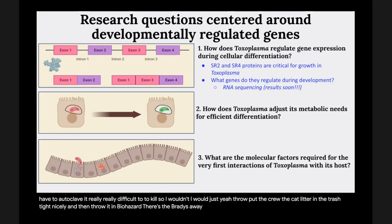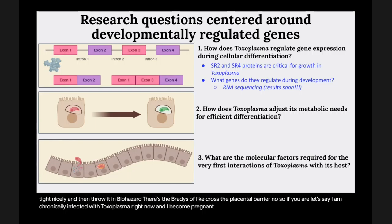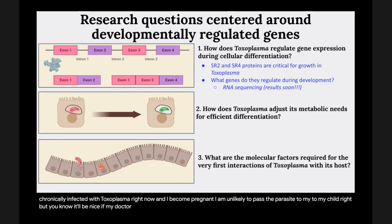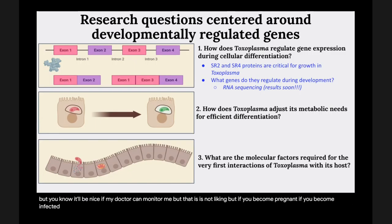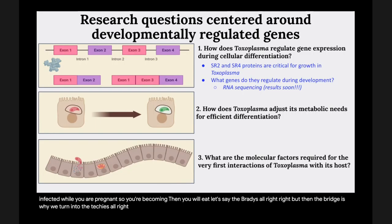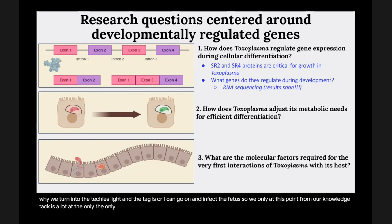Q: Does the bradyzoite cross the placental barrier? No. If you are chronically infected with Toxoplasma and you become pregnant, you are unlikely to pass the parasite to your child. But if you become infected de novo while pregnant, the bradyzoite you ingest will turn into the tachyzoite, and the tachyzoite can go on and infect the fetus. So the tachyzoite is the only known stage of the parasite that can cross the placental barrier.